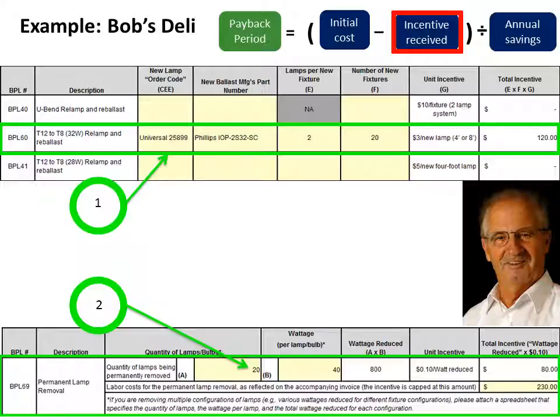Next, Bob pulls up a copy of the Excel version of the project guide for lighting. First, he finds the description of what he's installing and enters the new lamp order code, the new ballast manufacturer part number, the number of lamps per new fixture, and the number of new fixtures. Since each fixture has two lamps and he's installing 40 lamps, this equals 20 new fixtures. The project guide automatically calculates the total incentive of $120.